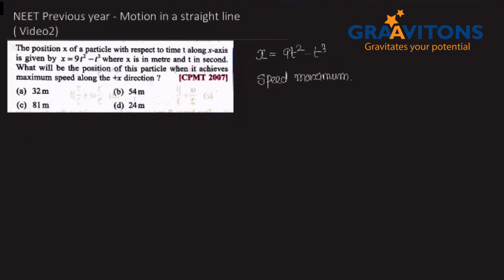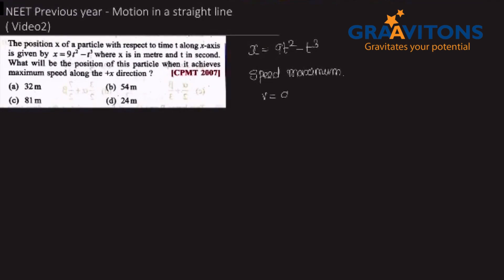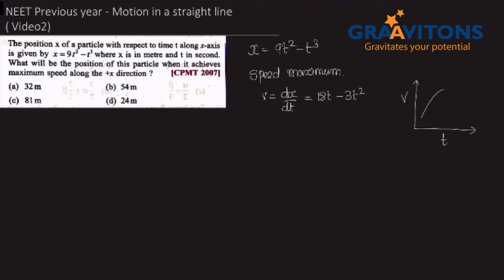Here is the clue: the condition is maximum speed. This means the slope dv by dt is equal to zero. So slope equals zero.